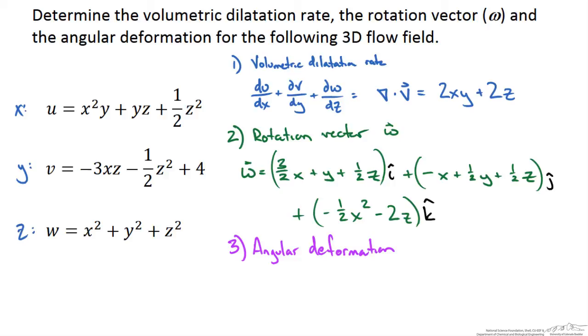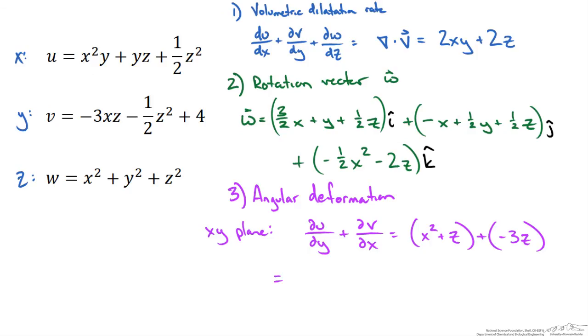Let's say we are just looking in one plane, the xy plane and we want to know if there is any angular deformation around the z axis. We take the partial of the x velocity with respect to y and add the partial of the y velocity with respect to x. When we take a look at this, we have already done these before and we see that our angular deformation is equal to x squared minus 2z which is not equal to zero. Therefore we do have an angular deformation of the fluid.